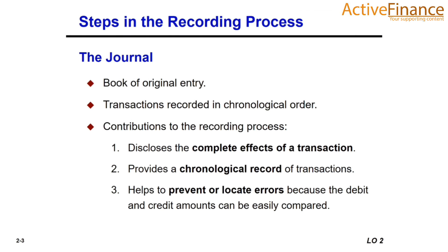A journal is a book of original entry in which transactions are recorded in chronological order — that is, date-wise. We record the transactions in the journal book, and companies initially record transactions in chronological order.